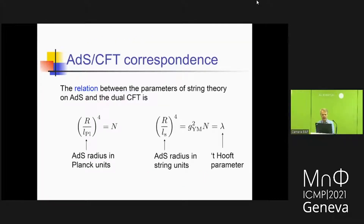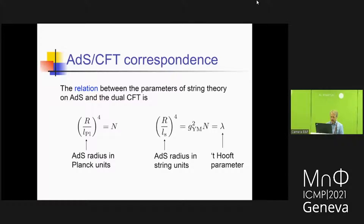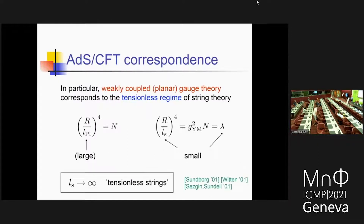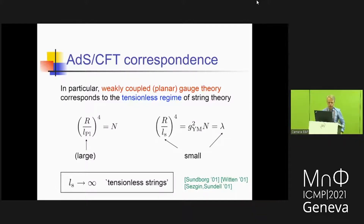Our aim is to understand the ADS-CFT correspondence. What's important is to understand how the parameters of the two sides are related to one another in order to understand where and how one has a chance to prove it. The parameters of the ADS side — the radius of the ADS space in terms of Planck units — is related to the rank of the gauge group N. The radius in string units is related to the lambda parameter of the gauge theory. What we'll mainly have in mind is to be at large N, which is the planar limit of the N=4 super-Yang-Mills theory.